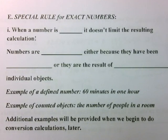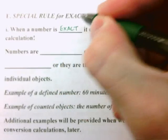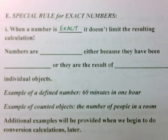So when a number is exact—I'll mention what that means in just a moment—it doesn't limit the resulting calculation. Because this number is exact, we do not look at how many sig figs it has in it, for example.